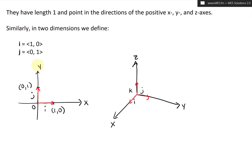For completeness, let's write the coordinates. The point at the tip of k is (0, 0, 1). The point at the tip of j is (0, 1, 0). And the point at the tip of i is (1, 0, 0).